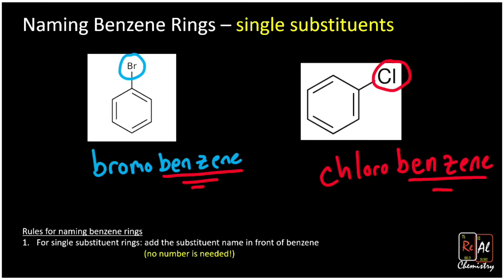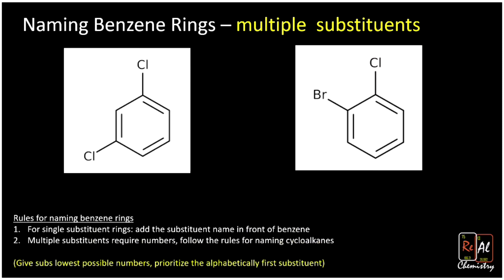We use benzene as the base name because it's such a special, important molecule, and we tack the substituent names on in front. When we only have one substituent we don't need a number. When we have multiple substituents we do need numbers, and then we just follow the same rules as for naming cycloalkanes. We want to give substituents the lowest possible numbers.